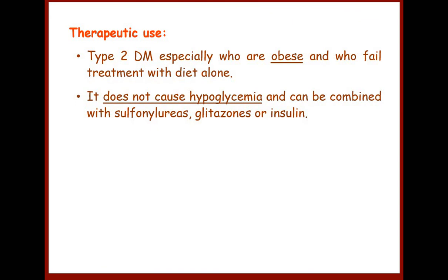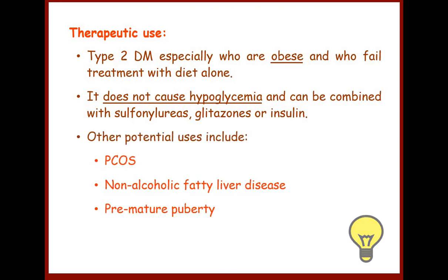Therapeutic uses: metformin is used in type 2 diabetes mellitus, especially in patients who are obese and who fail to manage their hyperglycemia with diet alone. As it does not produce hypoglycemia, it can safely be combined with sulfonylureas, glitazones, insulin, and GLP-1 analogs. Other potential uses include polycystic ovarian syndrome (PCOS), non-alcoholic fatty liver disease, and premature puberty.